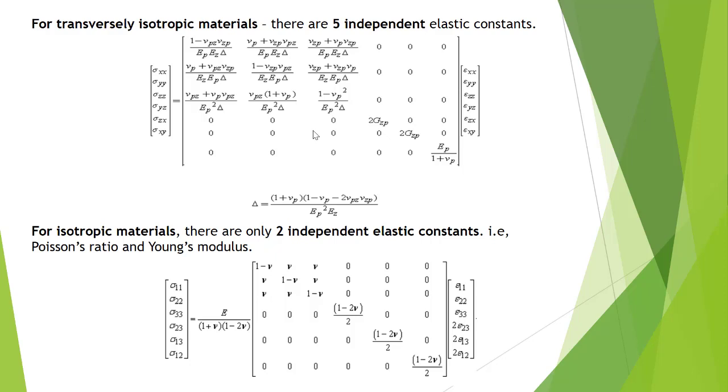It's clear that there are five independent elastic constants. For isotropic material, as you all know, there are only two independent elastic constants: Young's modulus and Poisson's ratio. We have the elasticity matrix over here. Thank you.